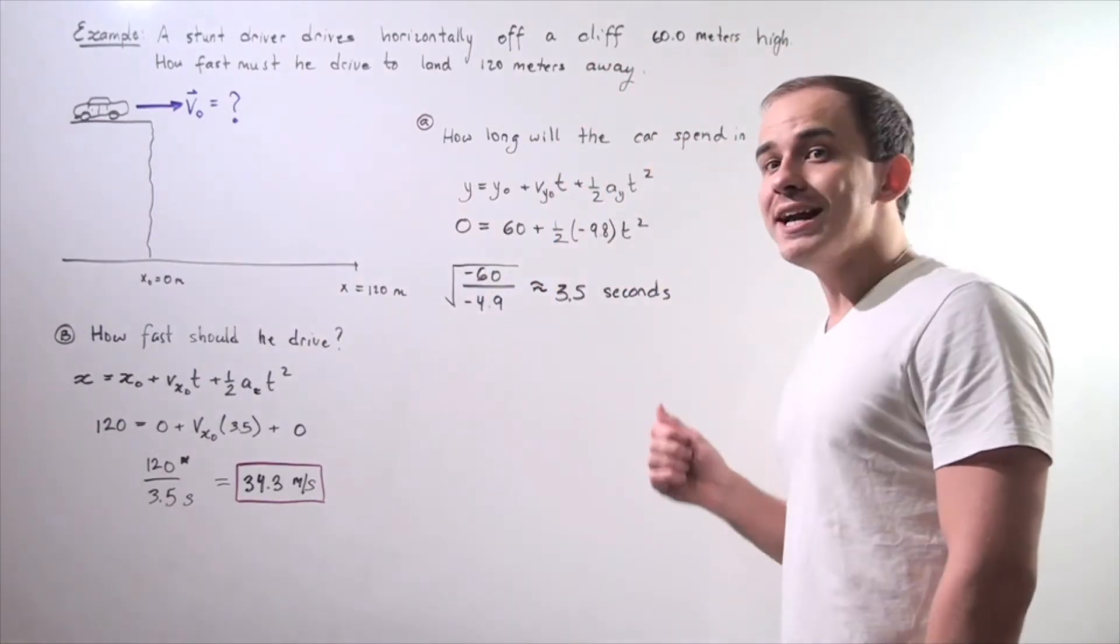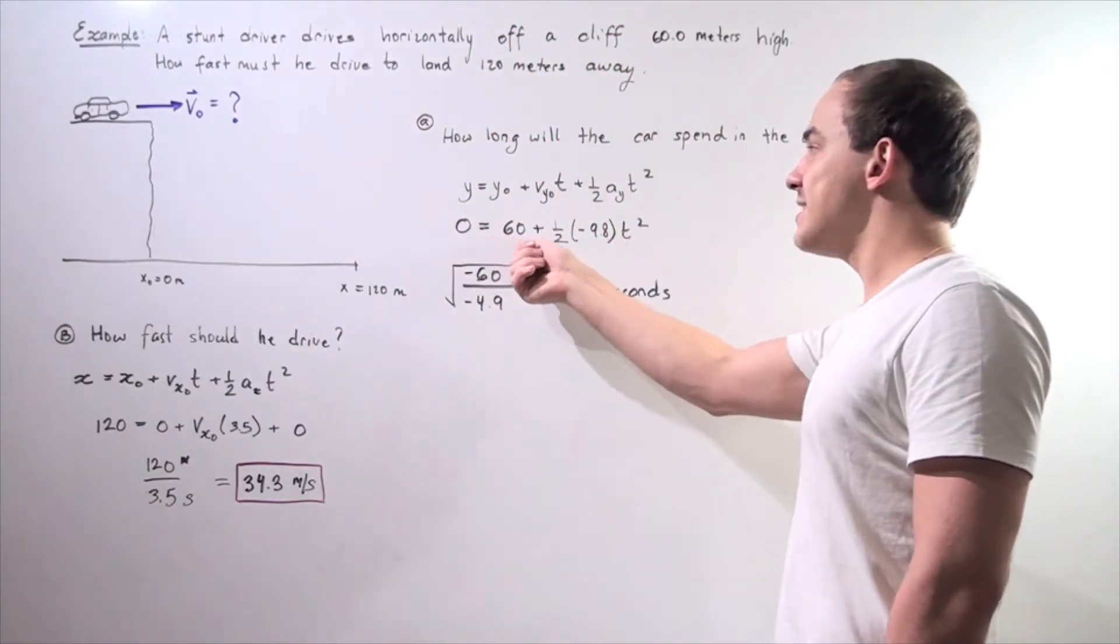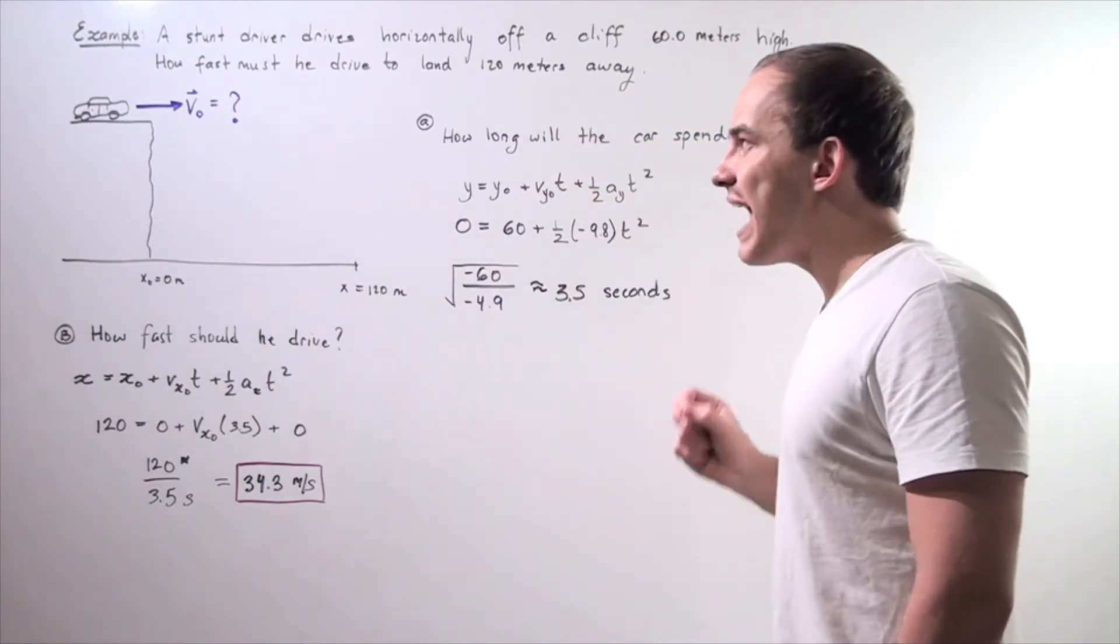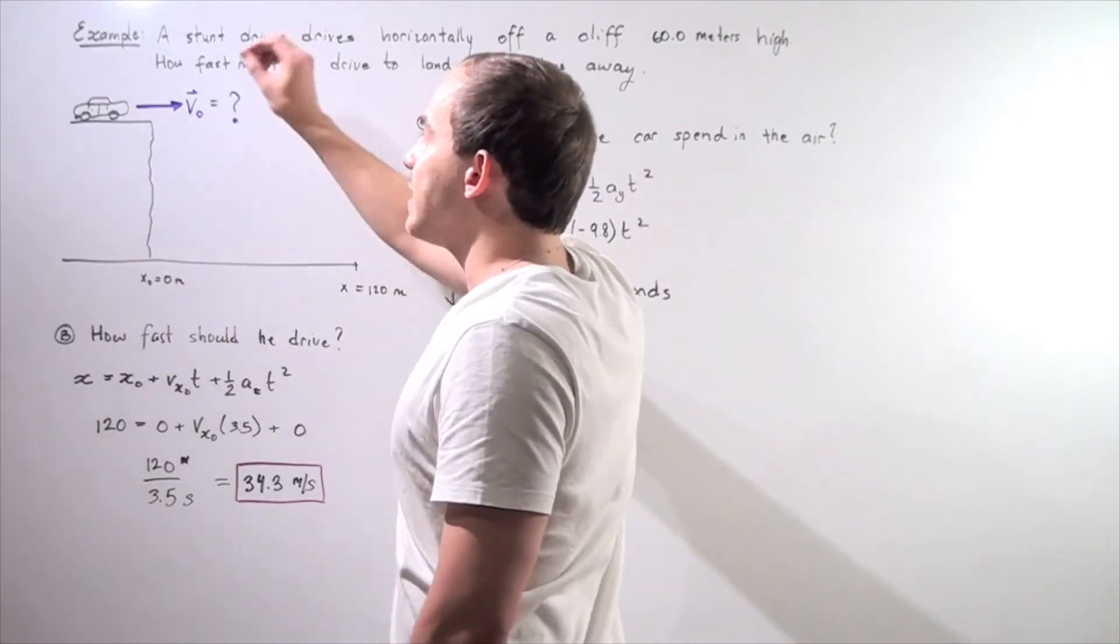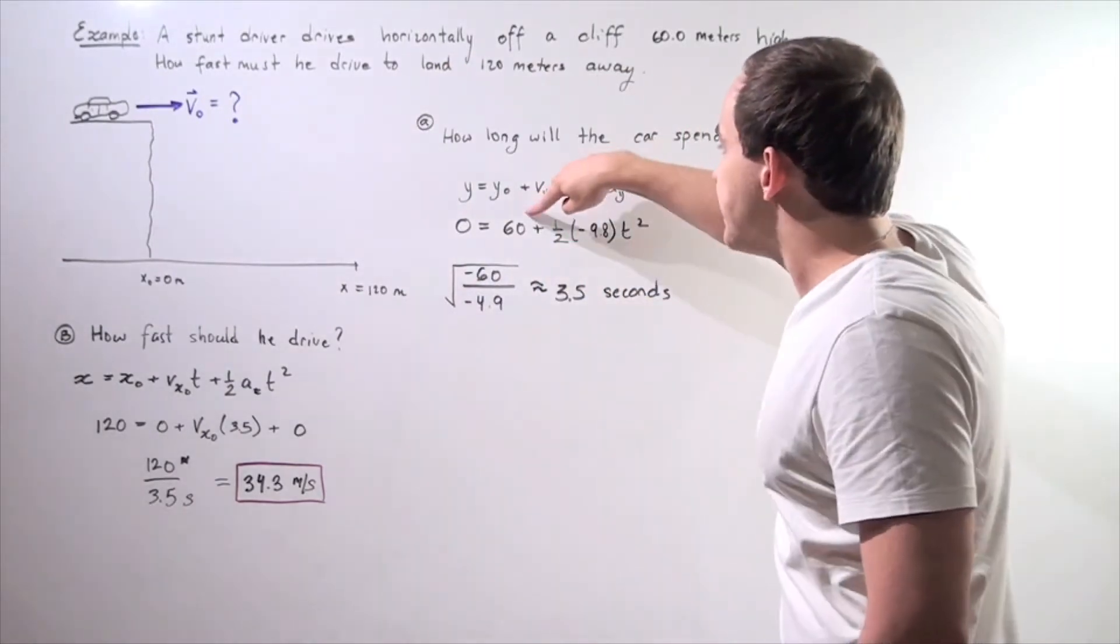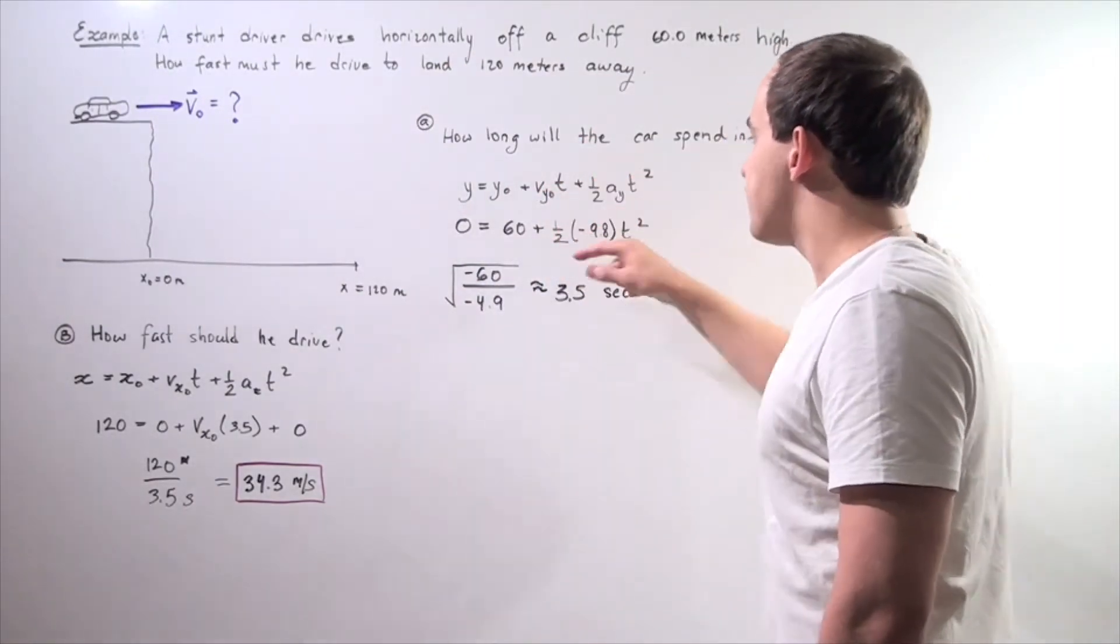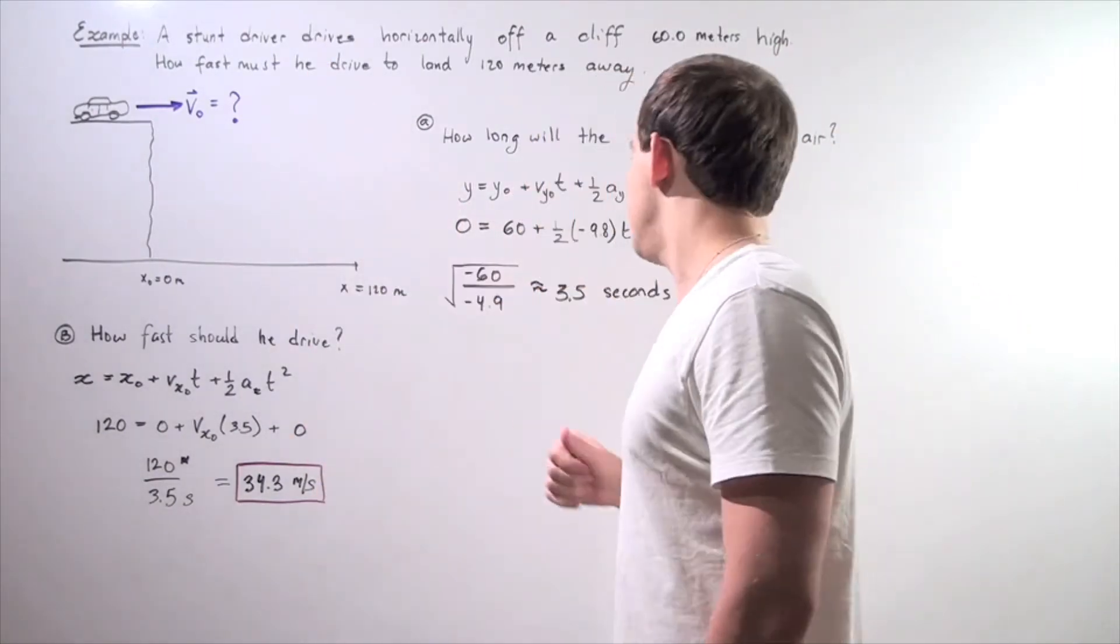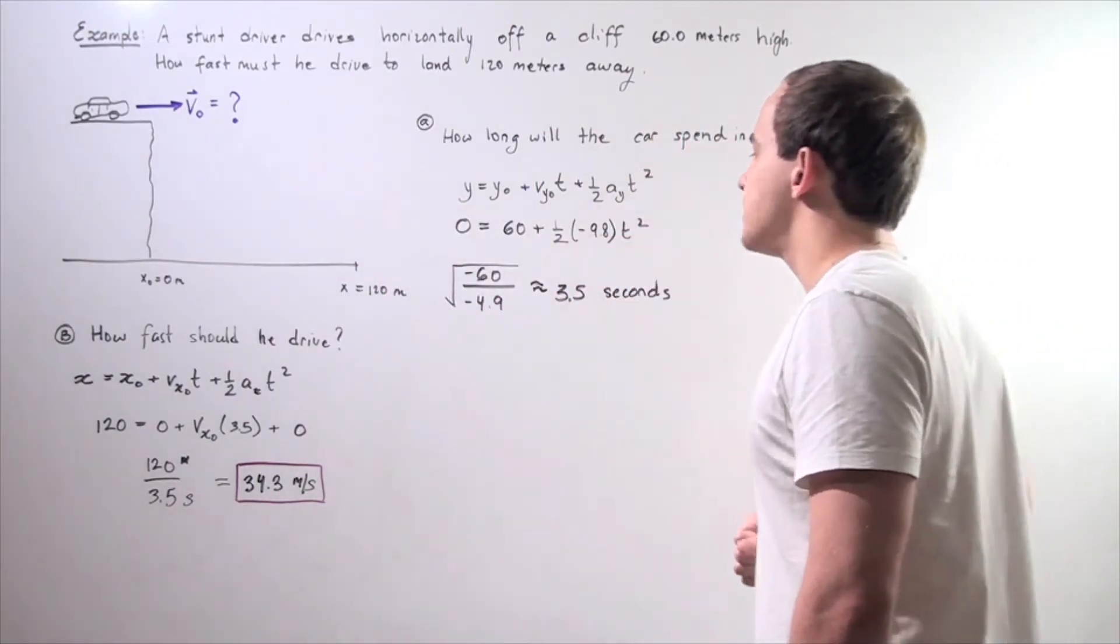equals our y-initial, so we begin 60 meters above the ground. So this is 60 plus, so our initial velocity along the y-axis is 0 because we're driving off horizontally and not at an angle. So that means our y-component is 0. So this turns out to be 0 plus 1 half. So we choose the upward direction to be positive, the downward to be negative. So our acceleration is negative 9.8 meters per second squared, multiplied by time squared.